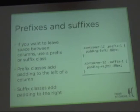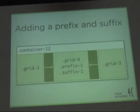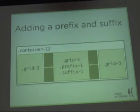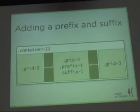Prefixes and suffixes: if you want to have an empty column for whatever reason, you can do that with prefix-dash or suffix-dash and however many empty columns you want before or after something. One of the really cool things about this kind of grid system is that there are no wrapping divs for each row. You just simply say grid-3, grid-4, prefix-1, suffix-1, grid-3 — that adds up to 12, so the next thing you add floats to the next line, effectively creating a second row.